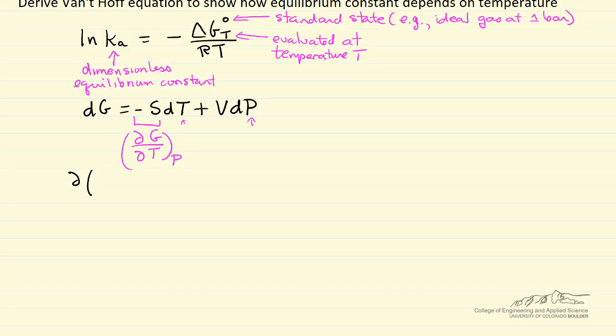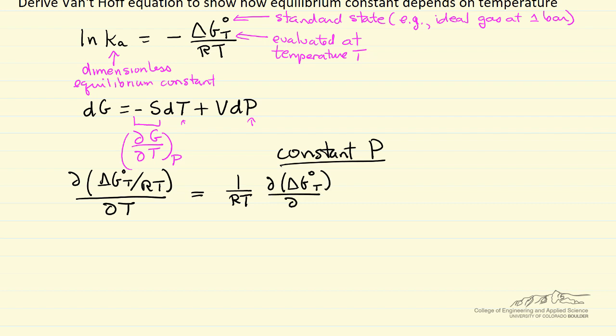The partial of delta G over RT, because that's going to be our equilibrium constant with a minus sign, how that changes with temperature at constant pressure. I'm not going to keep writing constant pressure, I'll just make a note. To do this calculation we're going to apply the product rule, which means let's take one term, one over RT, and then the partial of delta G with respect to T at constant pressure.